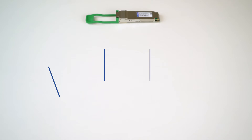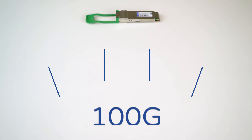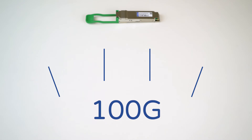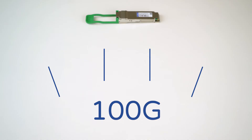QSFP28 supports four channels and can transmit 25GB per channel for a combined throughput. However, the QSFP28 interface is very flexible as it can achieve 100GB in other ways. Using a breakout connection, it can use just two channels at 50GB each, or it can even achieve a single channel of 100GB depending on the transceiver type being used.